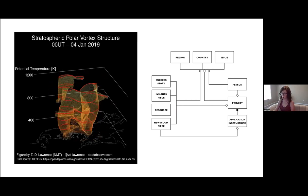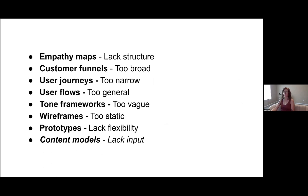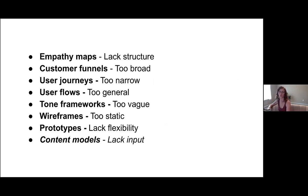Content models are missing something: they're missing input. Systems have input. In order to see how something will work, you need to get it into the wild — you need to see what happens when a human being interacts with it. When the chaos of human behavior meets the structure of your system, what happens?